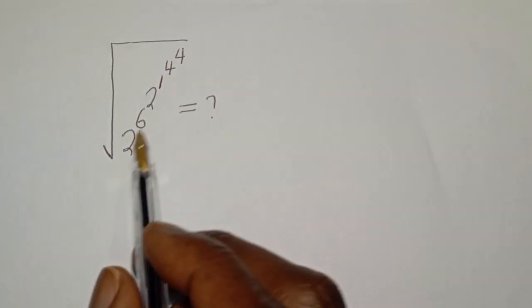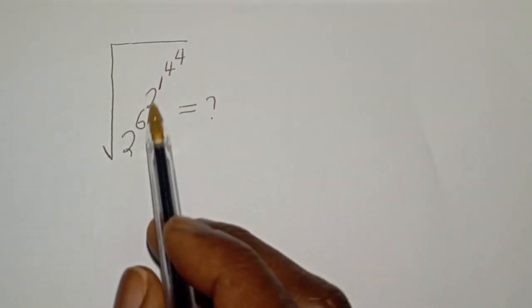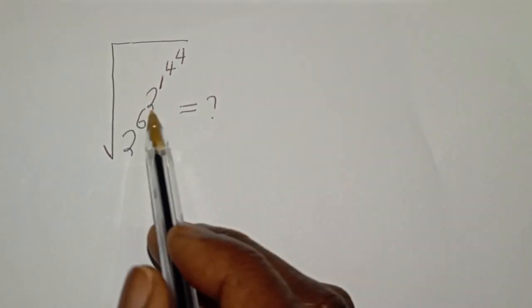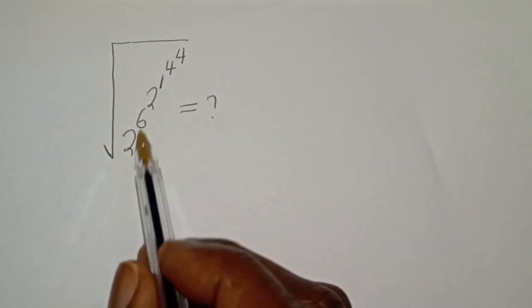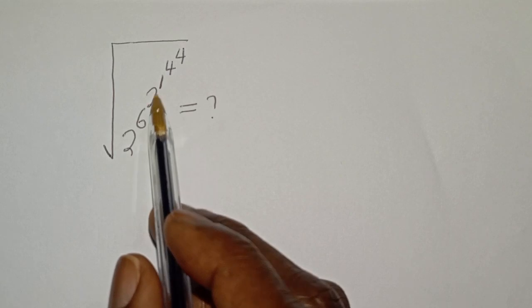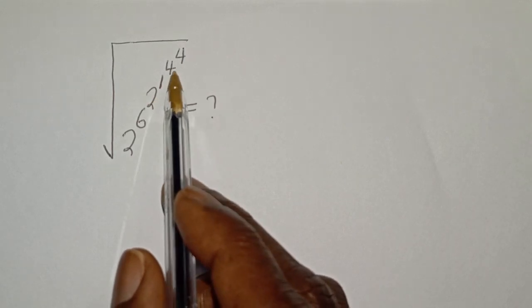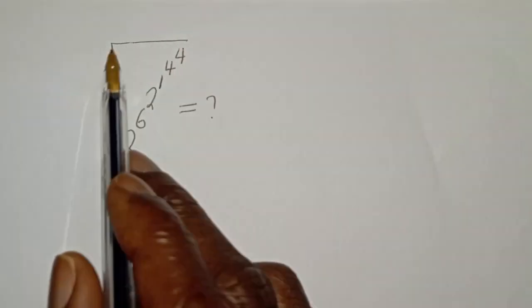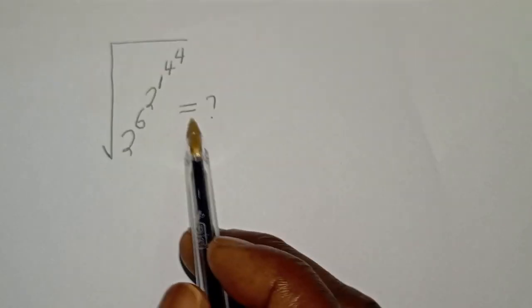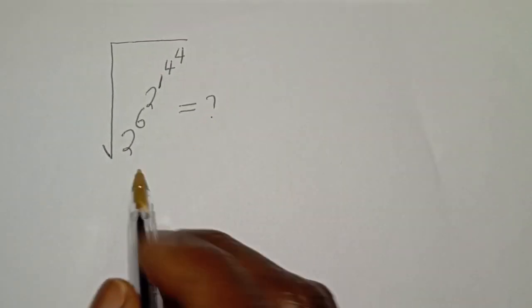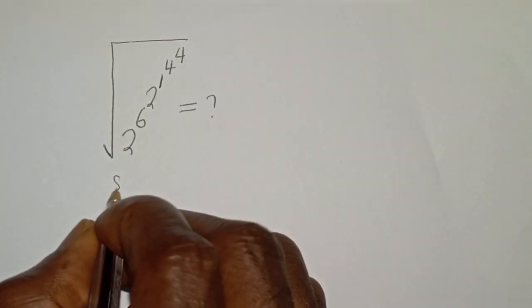Hello, welcome to Mathfocus. In this class, we want to simplify this math problem: 2 raised to power 6, raised to power 2, raised to power 1, raised to power 4, raised to power 4 — square root. What is the solution?